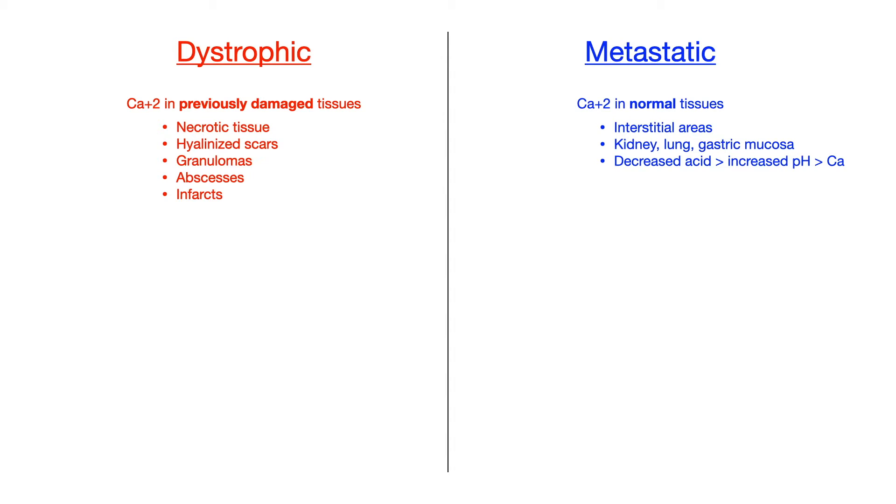I'm going to talk about some pathophysiology now. Anytime you rapidly lose acid, you're obviously increasing your pH level. And increased pH levels promote calcium deposition. So in the kidney, lung, gastric mucosa, and blood vessels, you have that interstitial area that has a tendency to lose acid, increasing pH, promoting an environment for calcium deposition. Again, calcium deposition has a tendency to occur in areas of increased pH.